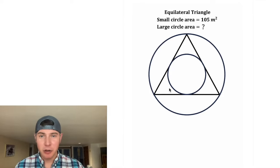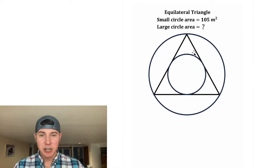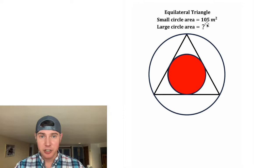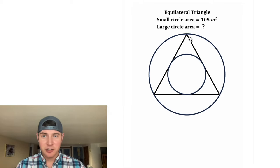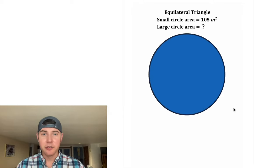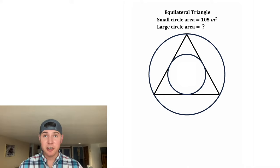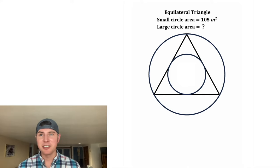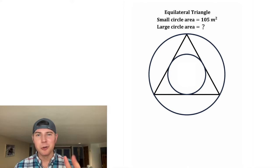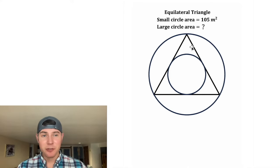Hey guys, this looks like a fun one. We have an equilateral triangle right here. We're given that the area of this smaller circle is 105 meters squared, and they want us to find the area of the larger circle. If you want to try this on your own, pause it, because I'm going to solve it in 3, 2, 1.